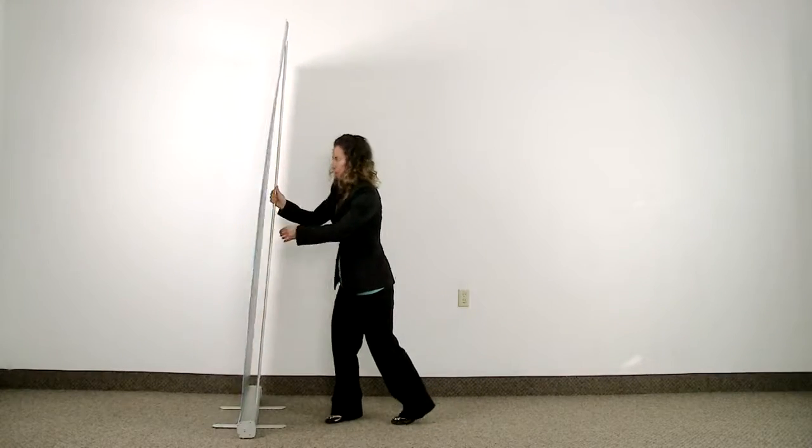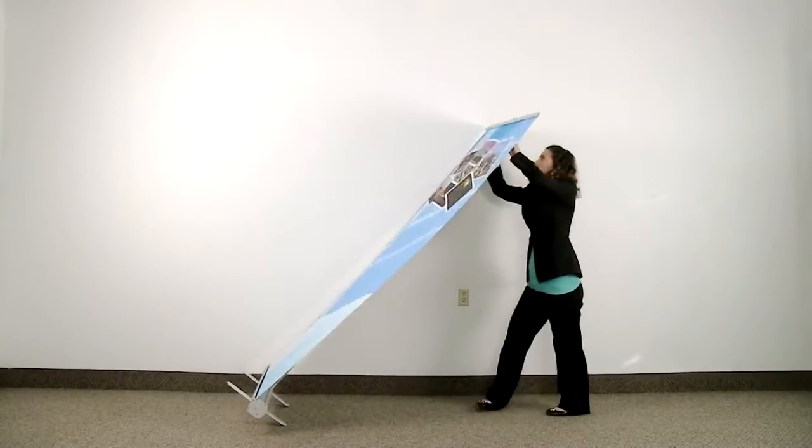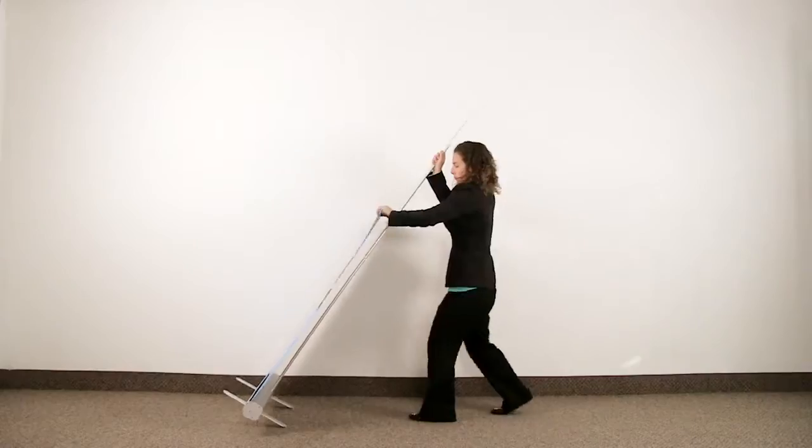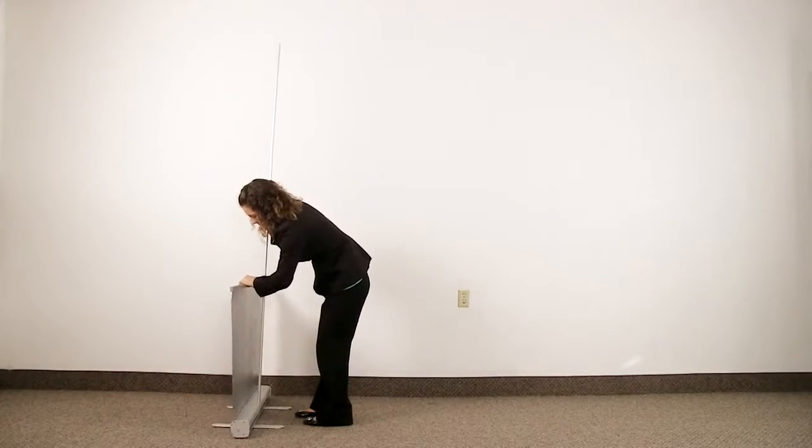To retract your banner, simply tilt the display backwards. Remove the hook from the top of the pole and gently retract the banner into the base. Do not let it go.